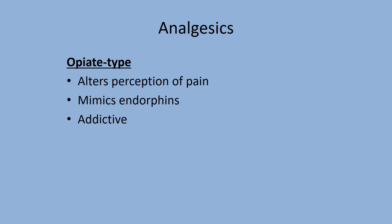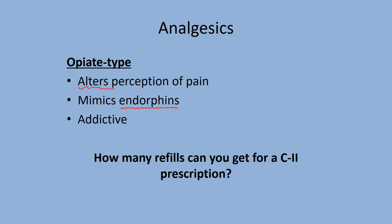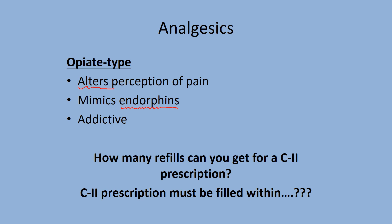Lastly, for severe pain, we have opiate-type drugs. Much like Tylenol, they alter your perception of pain, and they work like endorphins — natural neurotransmitters in your brain that act just like opioids. They can be addictive and produce a euphoric effect. Many opiate-type medications are Schedule C-II drugs. How many refills can you get for a C-II prescription? Zero. And when does that C-II prescription expire? Seven days from the day it was written.